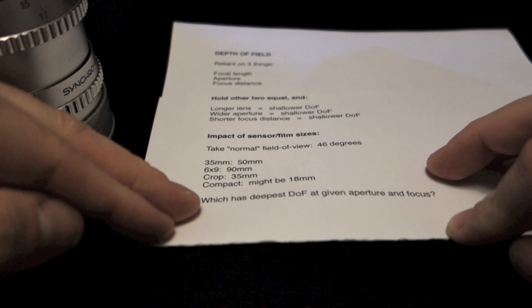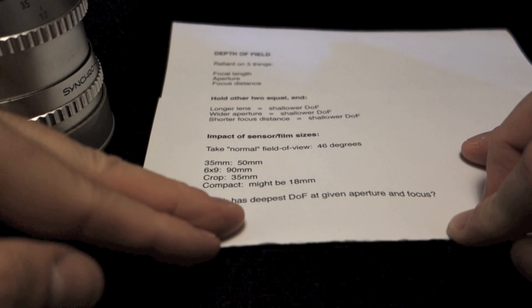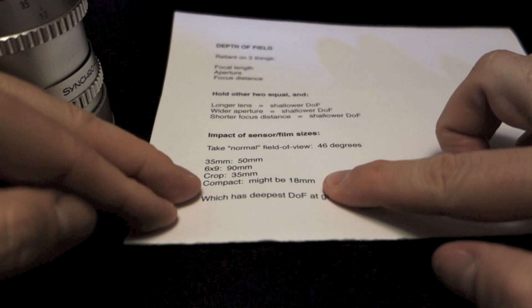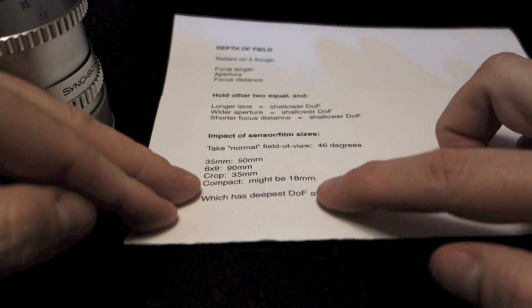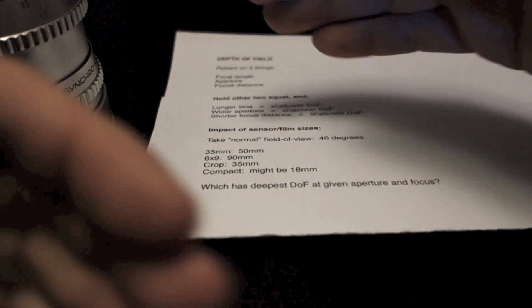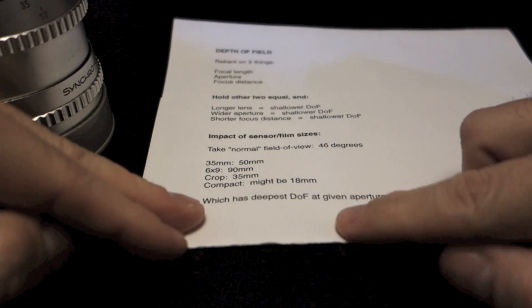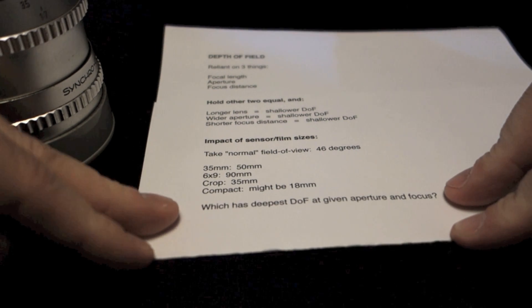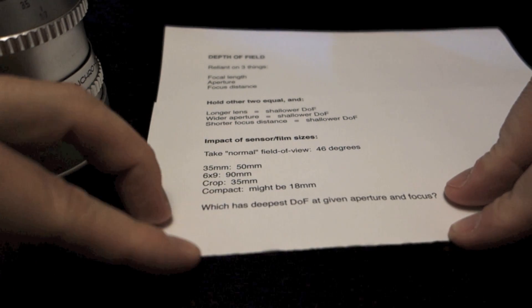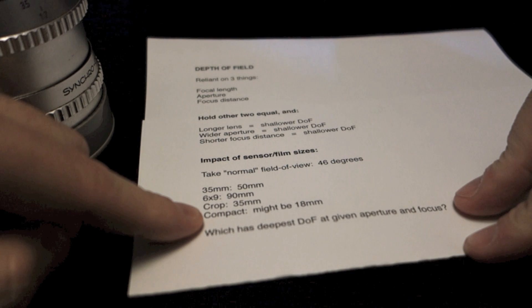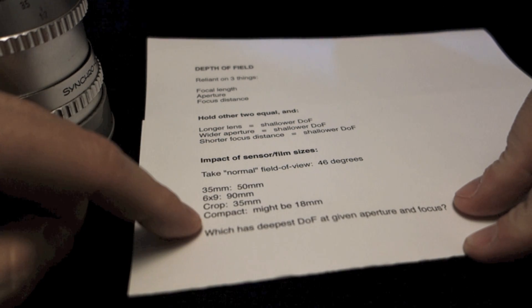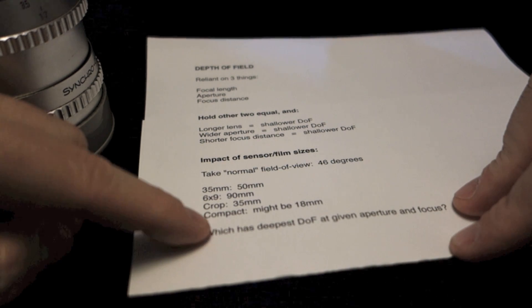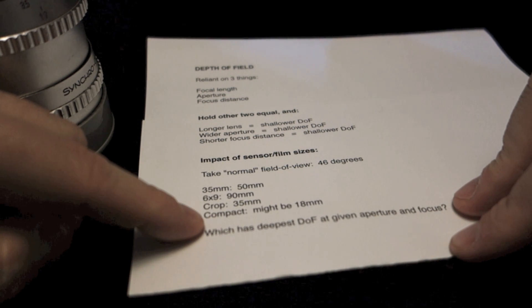So, what is the side effect of this? In other words, which has the deepest depth of field at a given aperture and focus? Because of the rules above, the 18mm lens has the deepest depth of field, meaning more stuff in focus. This is why, if you like the look of shallow depth of field, you like beautiful bokeh, you're not going to want to shoot one of these. It's very difficult to get very shallow depth of field with a compact camera, unless it has a huge aperture.